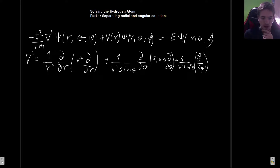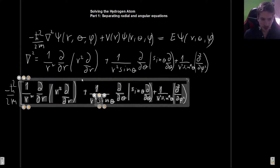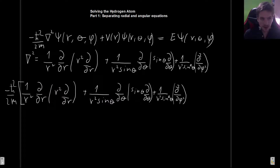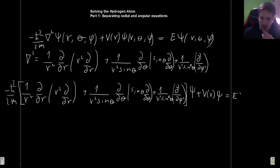Now we plug this Laplacian into the Schrödinger equation. We get −ℏ²/(2m) multiplied by the full Laplacian expression acting on ψ, plus the potential term, and all of this equals Eψ. I'll leave out the r, θ, φ dependence notation temporarily just to save room, but please keep in mind that the wave function depends on those three variables.